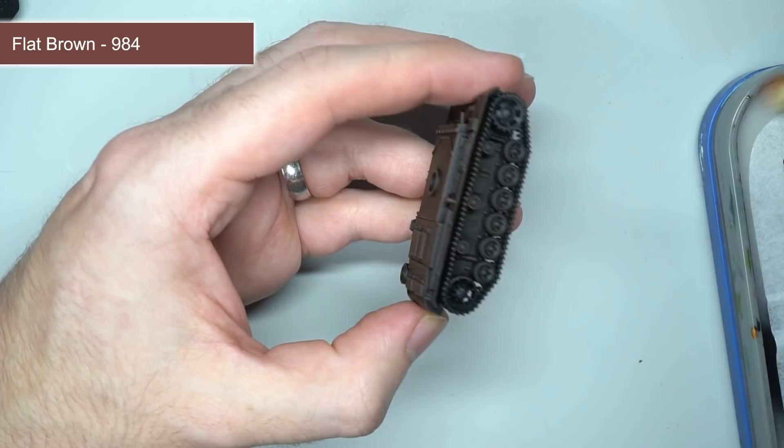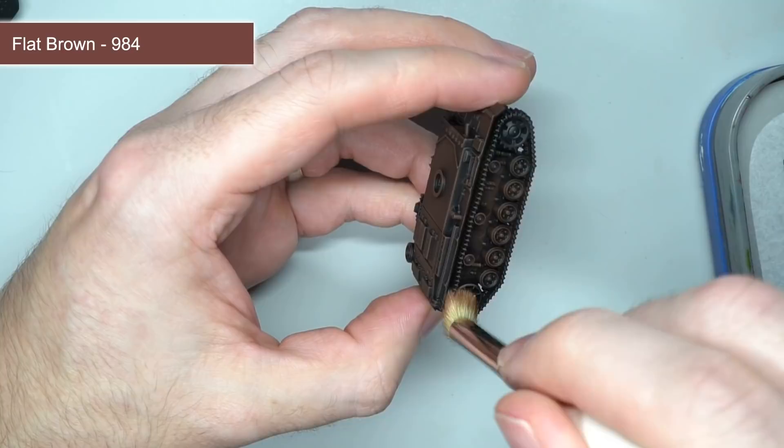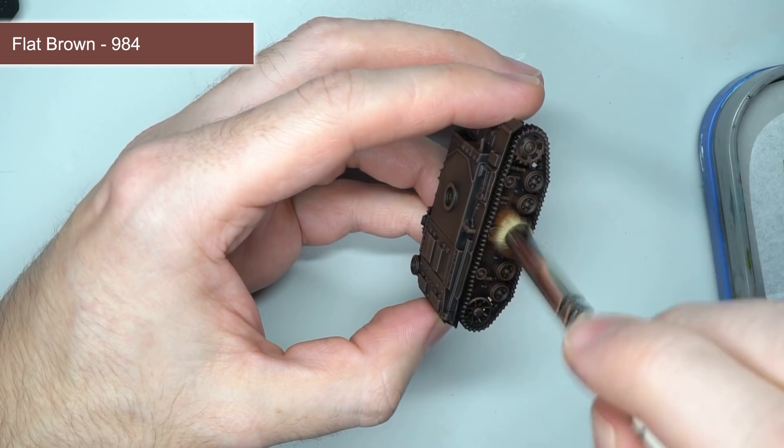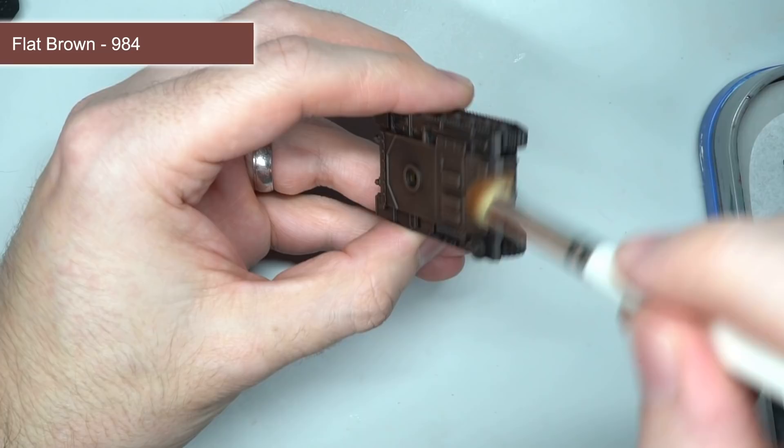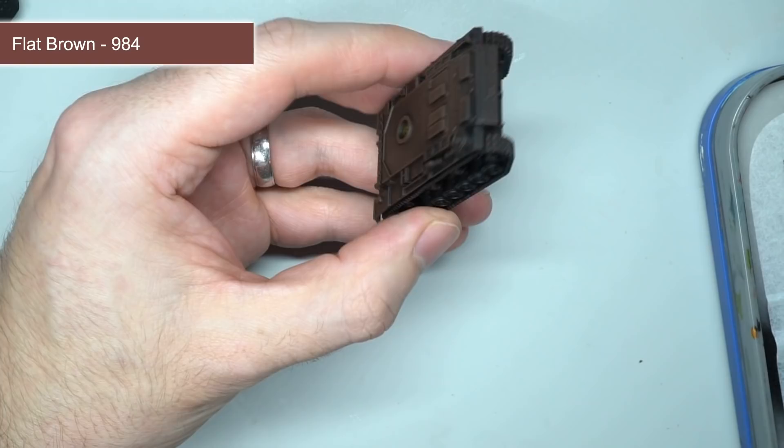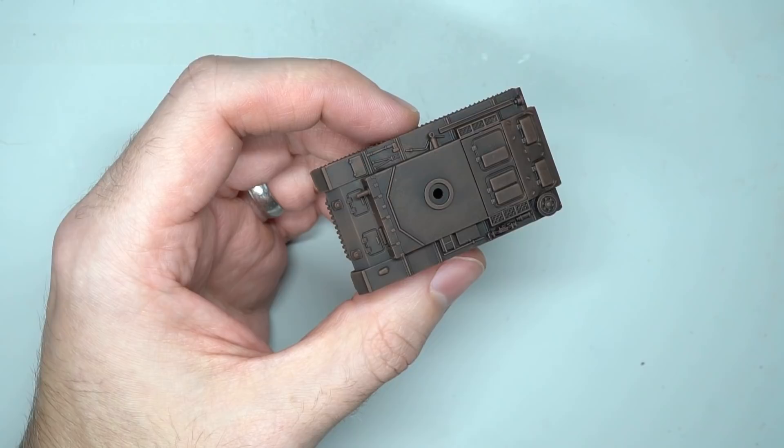The benefits of this technique are speed and simplicity. You can cover a large area quickly compared to conventional methods. Plus, you create shading and color gradients without glazing or blending. The color I chose was flat brown, applied to the entirety of the tank. This reddish-brown would provide a lighter base for my tan colors.